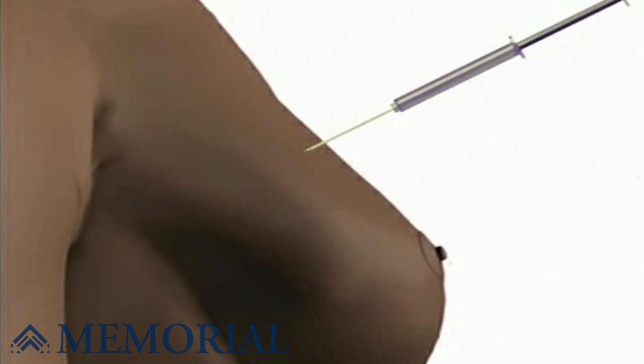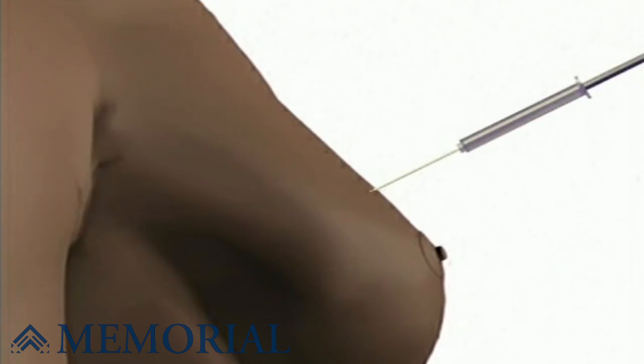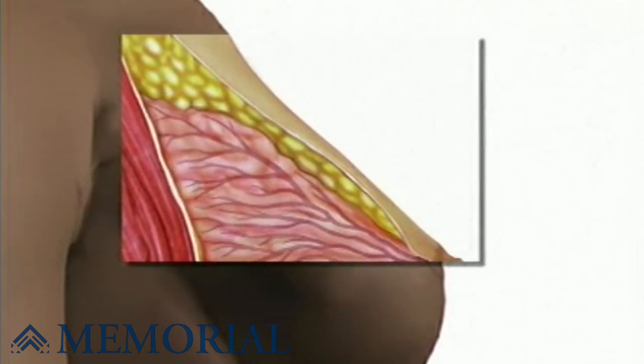The doctor will place a sterile drape or towels around the operative site and will inject a local anesthetic. This will sting a bit, but your breast will quickly begin to feel numb. Usually, the surgeon will inject more than one spot in order to make sure that the entire area is thoroughly numb.